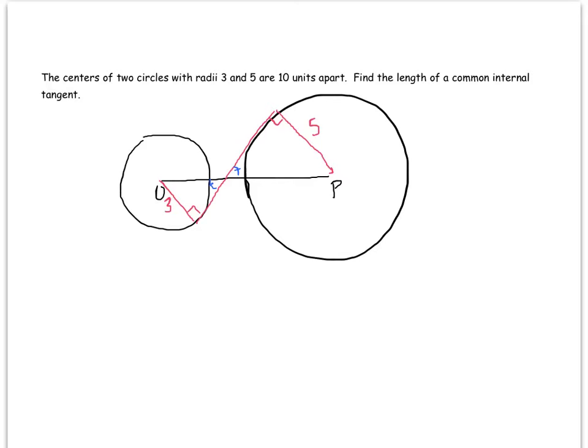If that's true, then I can set up a proportion. So let's call this length here x, this piece of the triangle. Then this one here would have to be 10 minus x because those centers are 10 units apart. So I know that 3 over 5 equals x over 10 minus x.